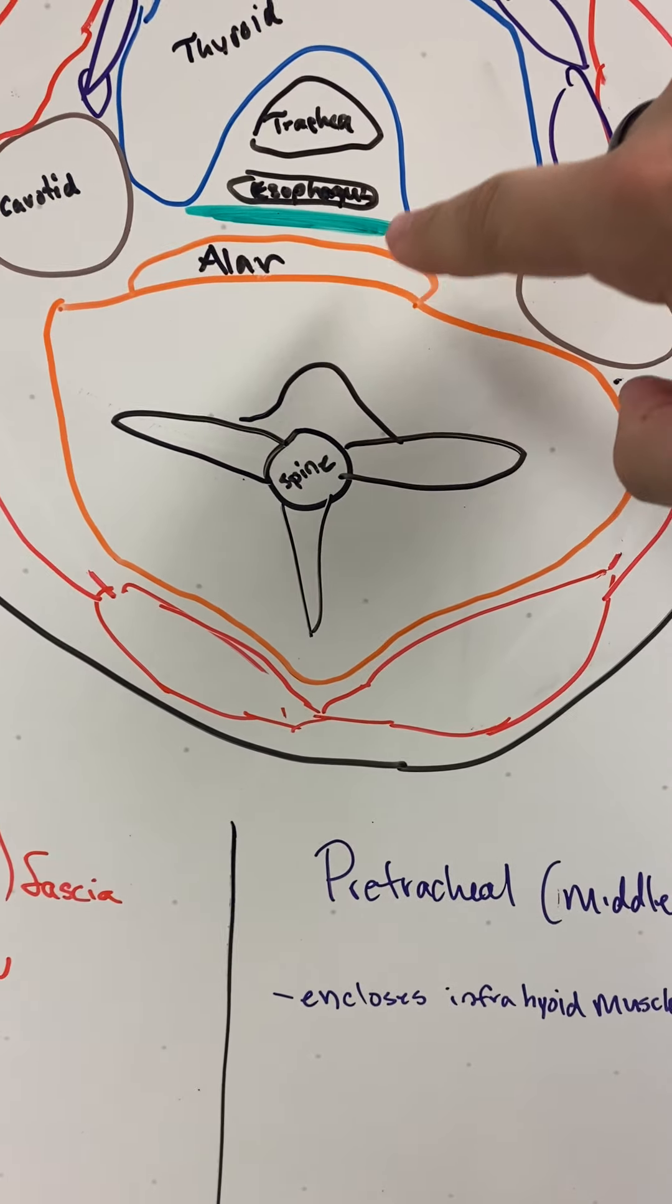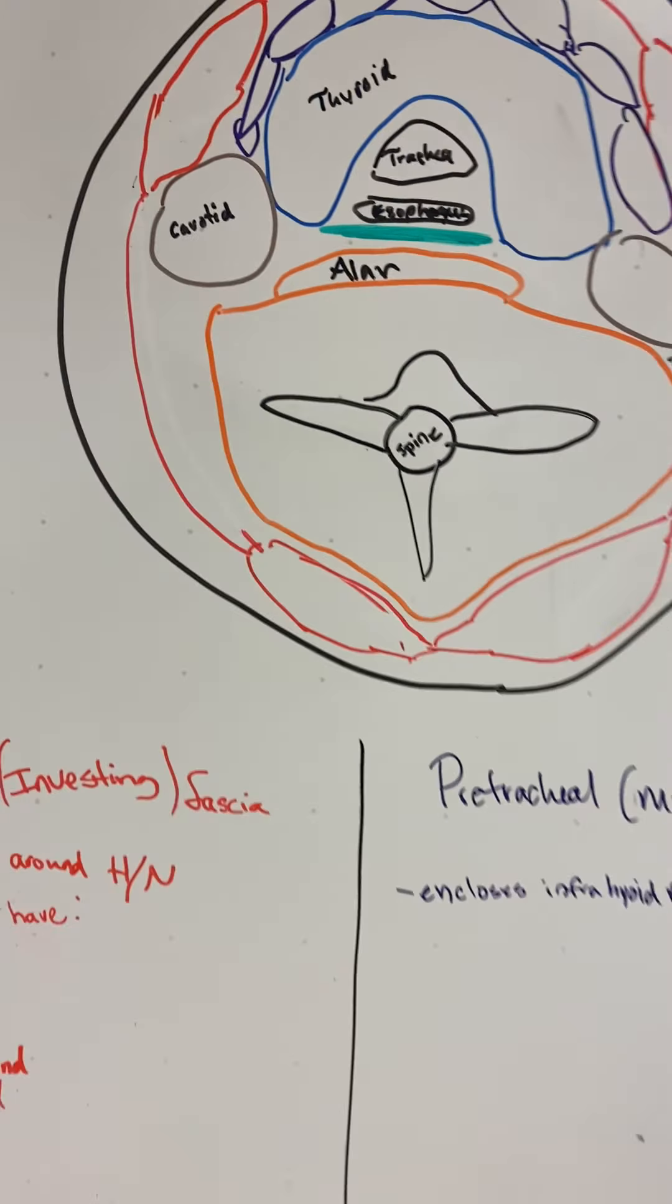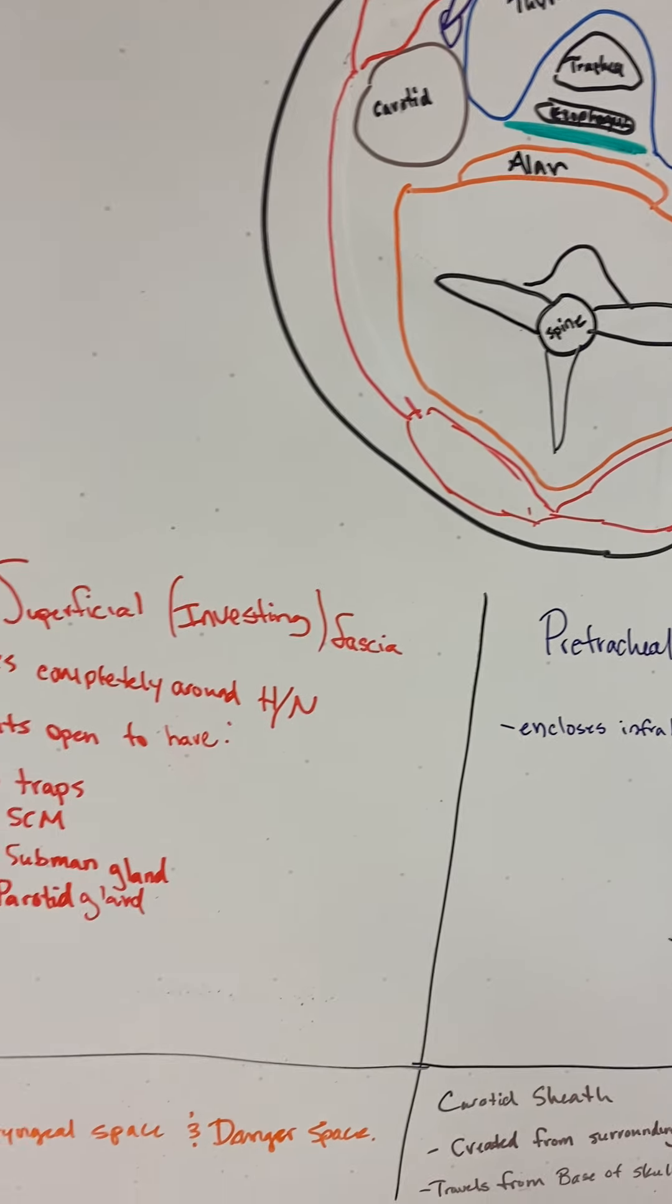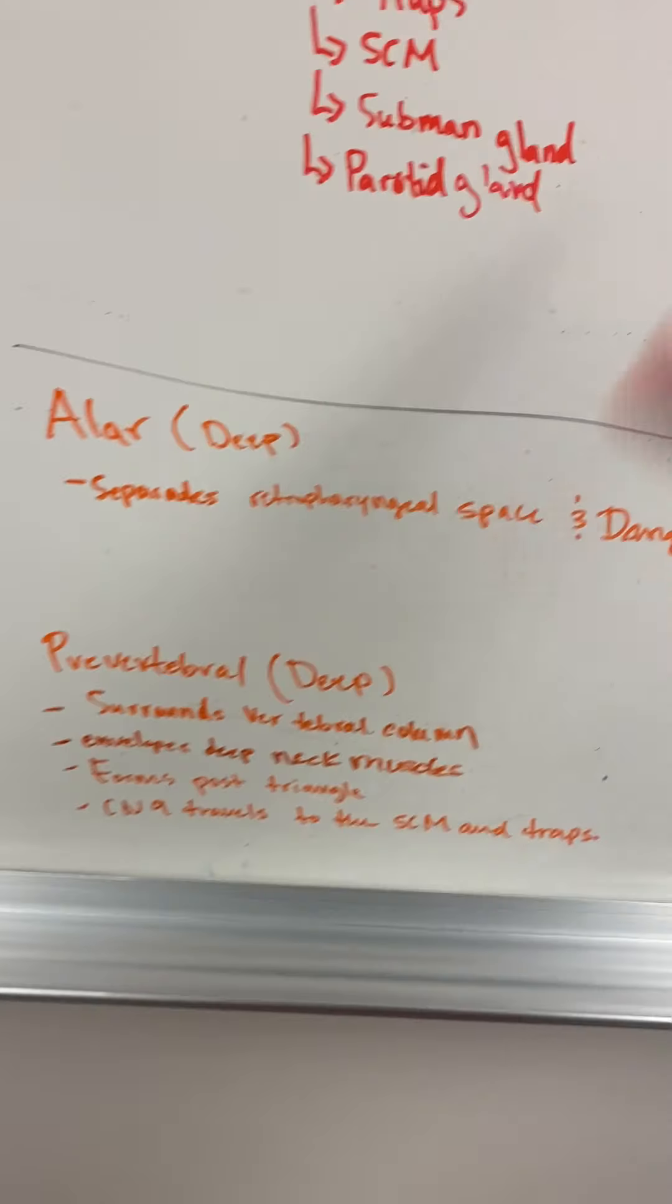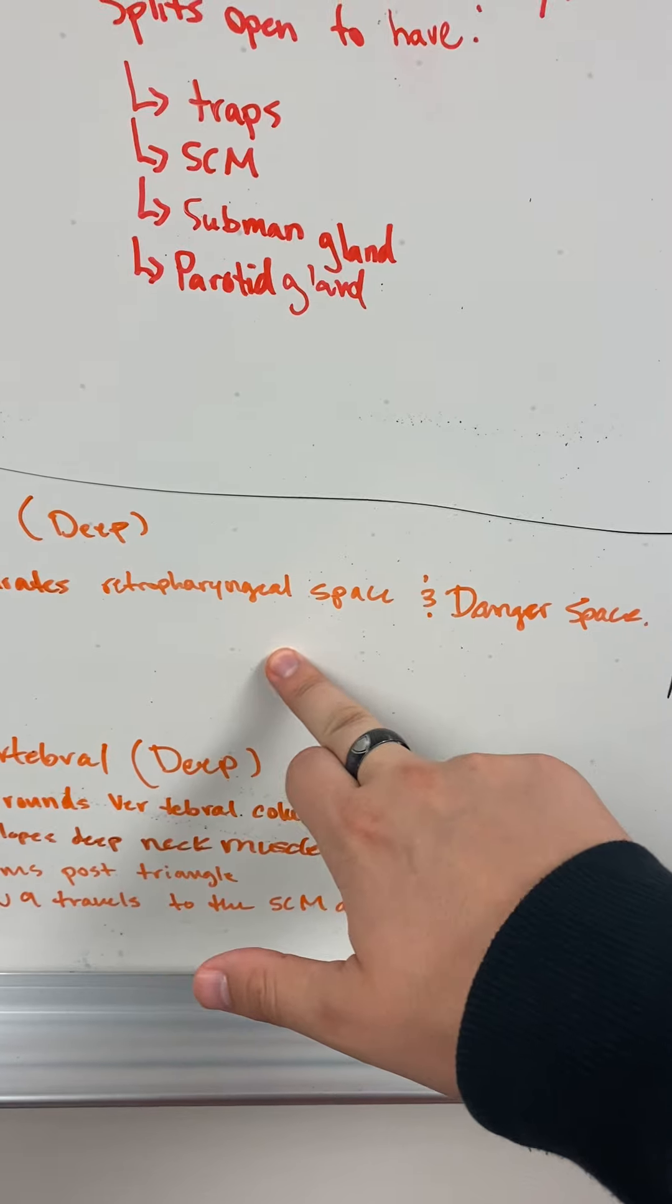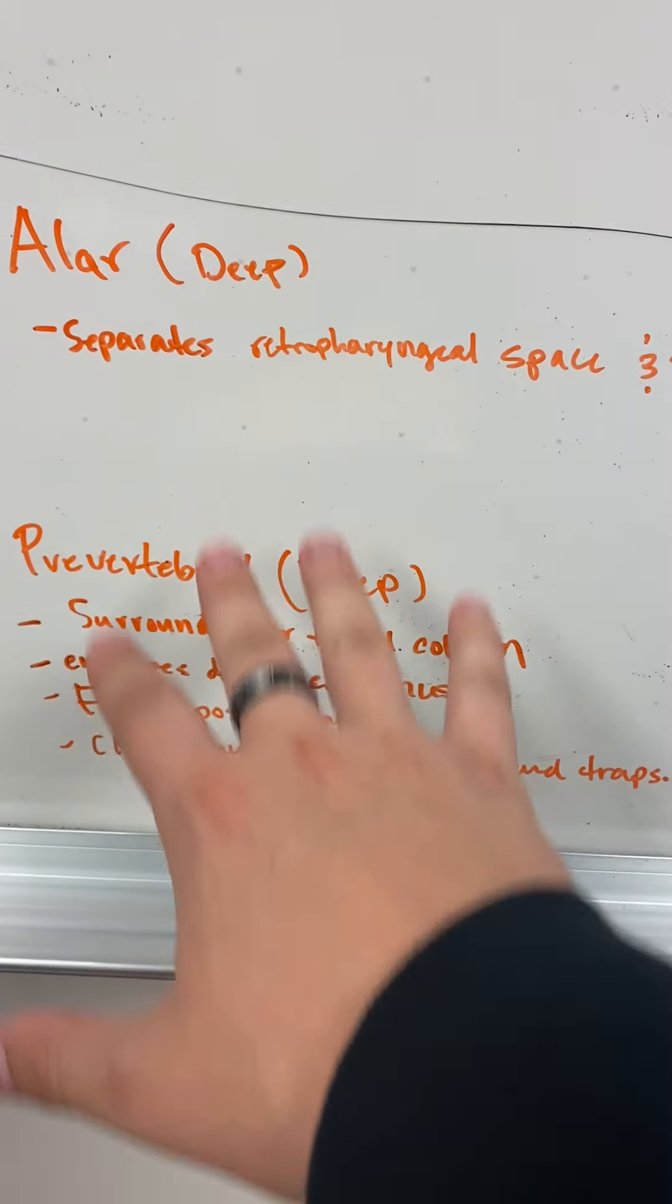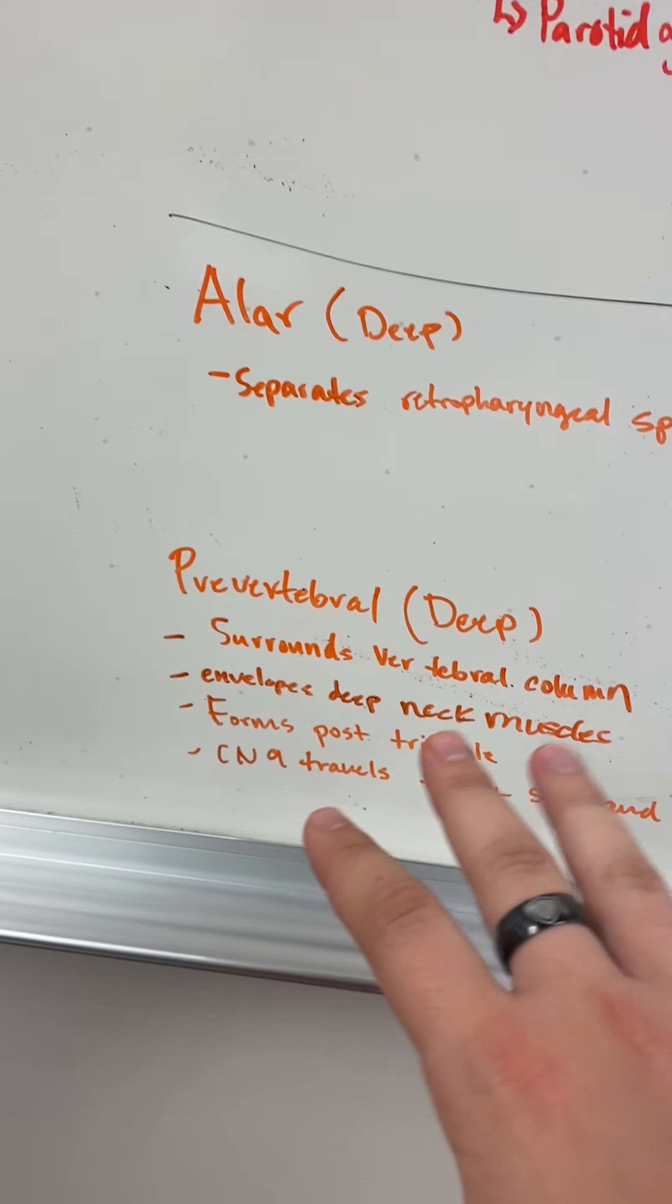What's important is these two areas, the alar and the buccopharyngeal. They have spaces in there: the retropharyngeal space and the danger space. Now we have that alar, which I just mentioned. It separates the retropharyngeal space and the danger space. So these spaces are deep now. We got that first layer, second layer, and now these are deep.